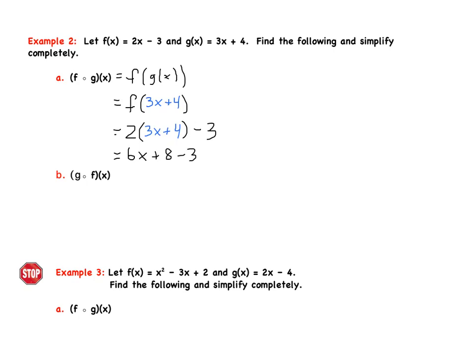So then our final answer after we gather all of our like terms is going to be 6x + 5. So f of g of x is equal to 6x + 5. So when I plugged g into function f, that's what we got. We got our new function of 6x + 5.